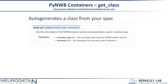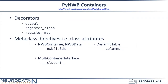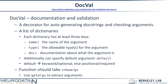Use get_class as a way to get started but eventually move to having your own API code. PyNWB has these container objects overlying HDMF, and these containers have a couple of decorators you'll need to be familiar with, along with what I call metaclass directives — class attributes that you set and that will auto-generate functionality and code for you. The first decorator to become familiar with is docval.